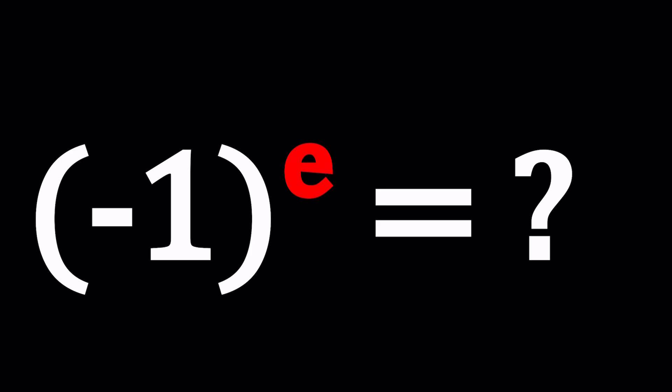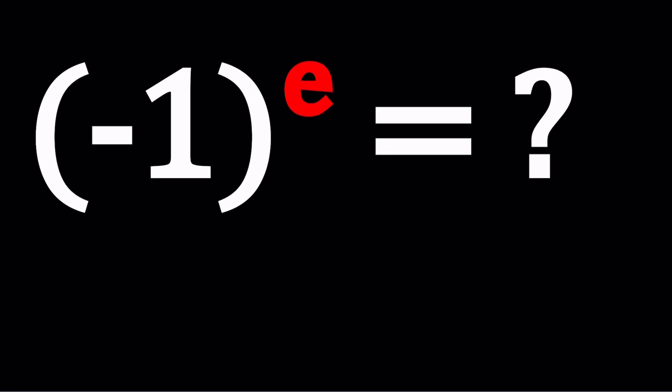So we have an interesting exponential expression here because we have first of all negative one at the base and e in the exponent. So why is that interesting? Because we know that if you raise negative one to the second power, you get positive one, right? Because two is even. If you raise negative one to the power of 33, 33 is odd, the answer is going to be negative one.